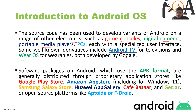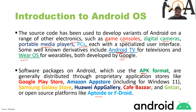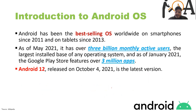Software packages on Android use the APK format. Every app has the .apk extension. These APK format apps are generally distributed through proprietary application stores like Google Play Store, Amazon App Store (from Windows 11 onwards), Samsung Galaxy Store, Huawei App Gallery, Cafe Bazaar, and GetJar, or open source platforms like Aptoide or AppDroid.